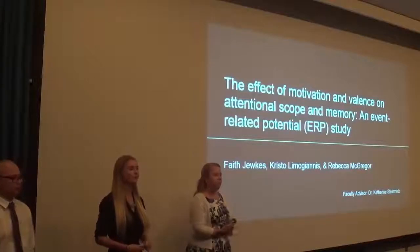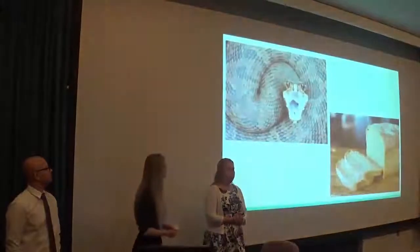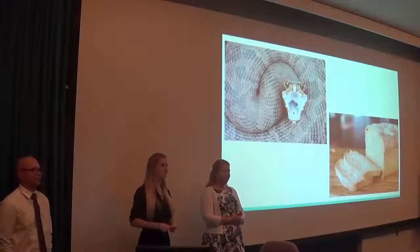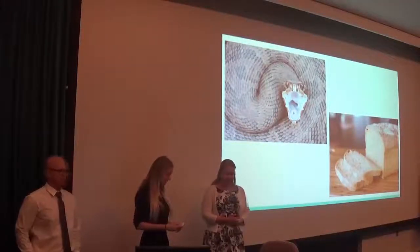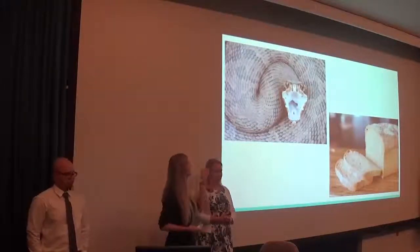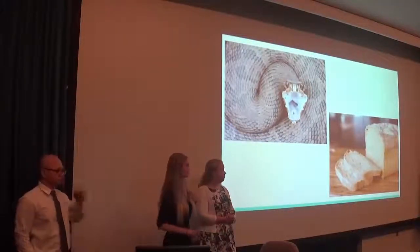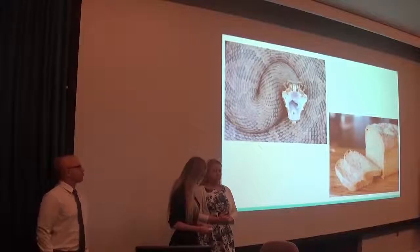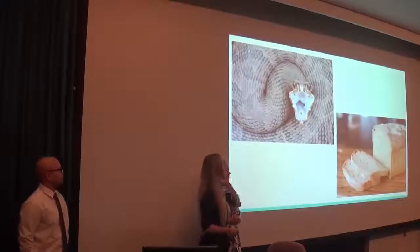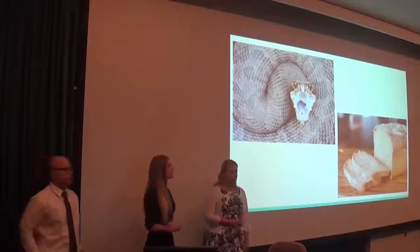We're going to present you with two different images, and we want you to think about which one you would likely pay more attention to. Raise your hand if you think you paid more attention to the snake image. Previous research would indicate that you would likely attend to and remember the snake image, which is considered a negative image, more than the bread picture, which is considered positive. You would also likely want to avoid the snake image more than approach the bread image. This poses the question of whether valence is the only difference between these two images.